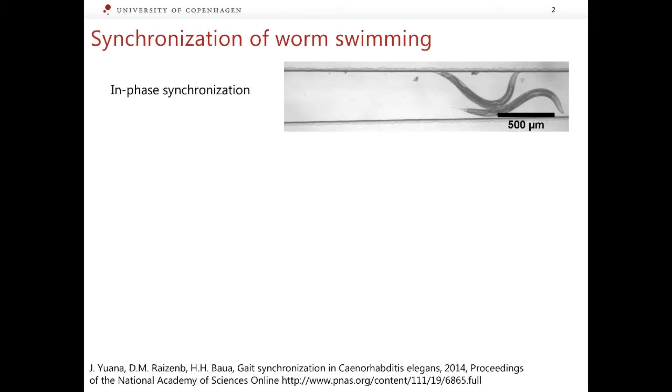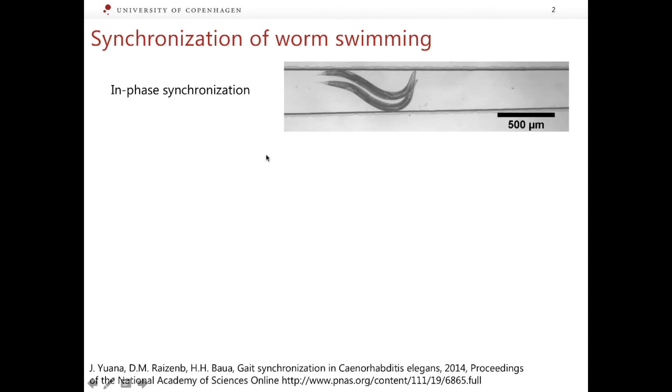But when two worms are swimming very close to each other, they feel each other's presence through a number of mechanisms. Through the waves created by their neighbor, which reach their bodies, through occasional collisions and through some chemical interaction. Apparently, it becomes more pleasant, less difficult for them to swim in such a close proximity to each other, if they synchronize their bodily movements.